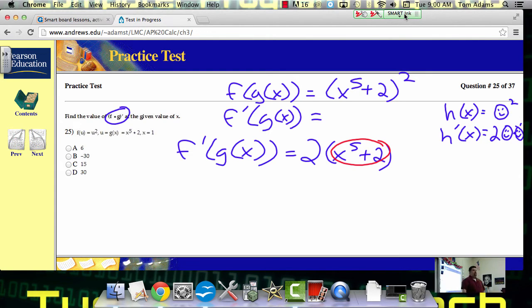Okay, so what's the derivative of the stuff circled in red? 5x. 5x to the fourth. Yeah.